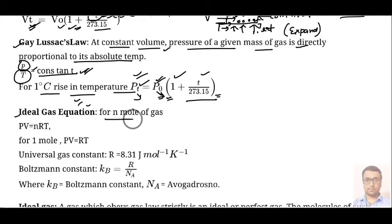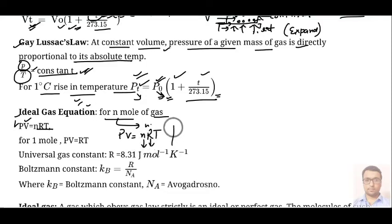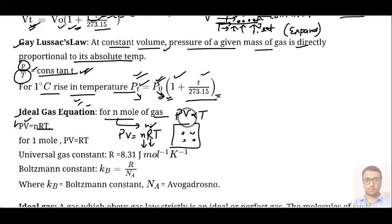After that, we have the ideal gas equation. For n moles of a gas, PV = nRT, where R is the gas constant. If you fix the number of moles inside a container, and n and R are both constant, then we can say PV is proportional to T.